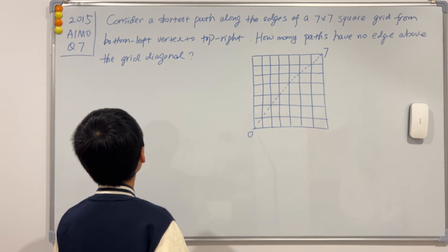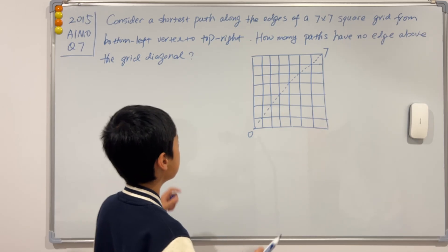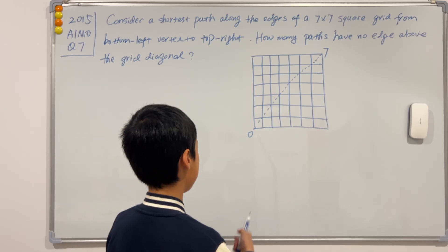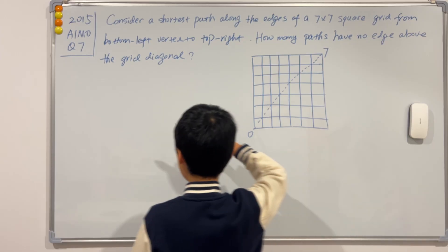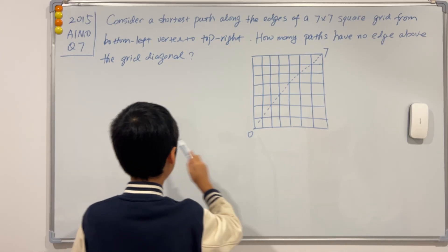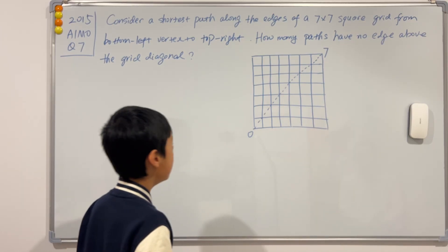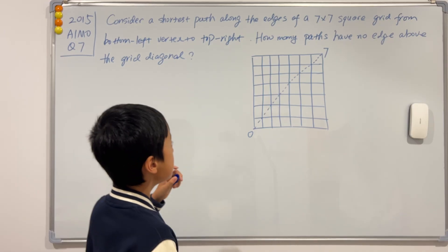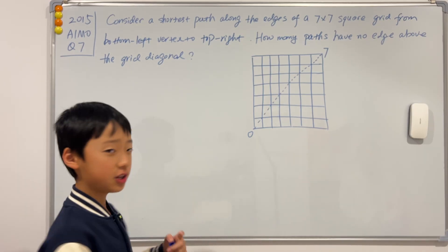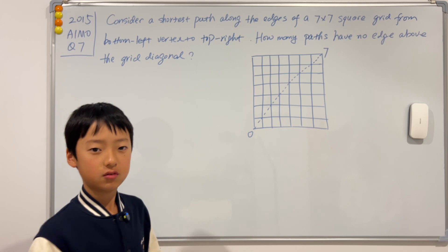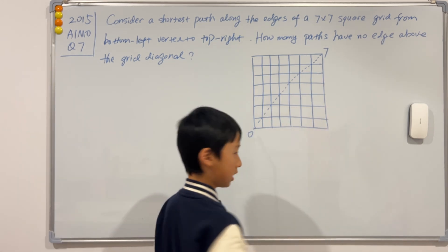This question asks us to consider a shortest path along the edges of a 7x7 square grid from the bottom left vertex to the top right. It's asking us how many paths have no edges above the grid diagonal, and this is the grid diagonal that we're talking about.